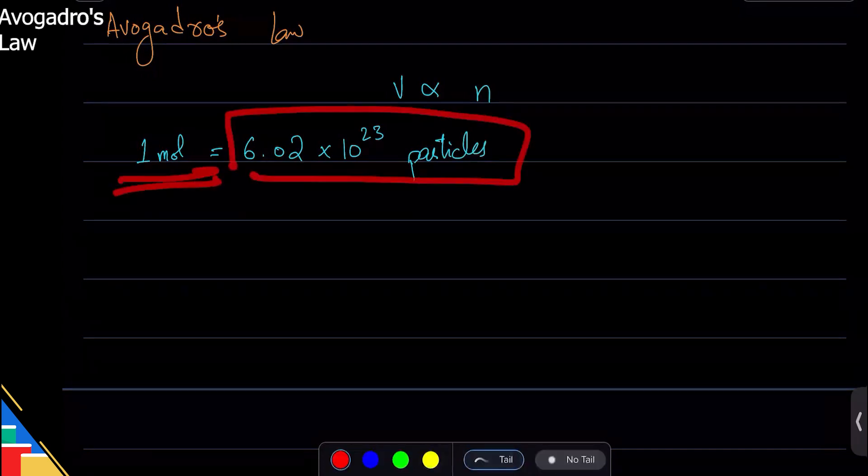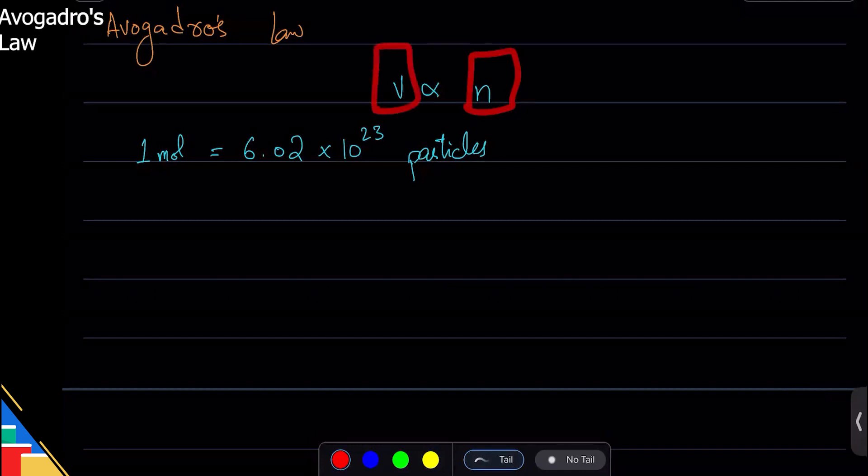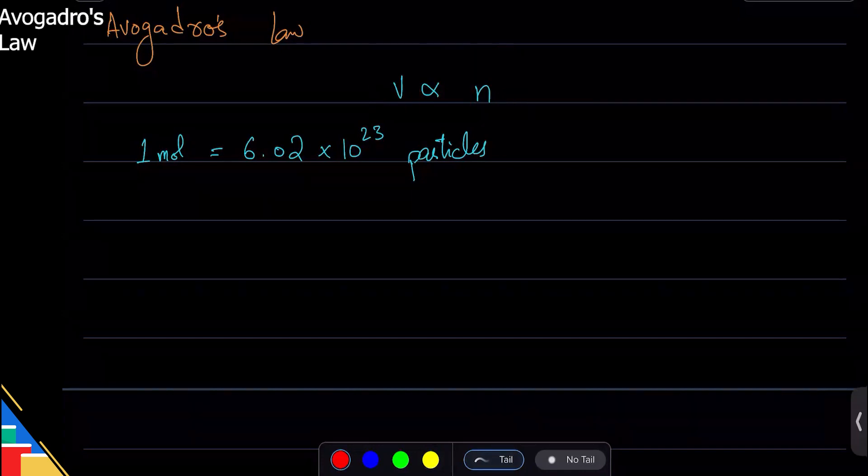We fixed it, and then that means if I fix this, if I give it one value, because if number of particles increase, the volume increases. If number of particles decrease, the volume decreases. So if I fix number of particles, volume should also be fixed, and that's exactly what happens.